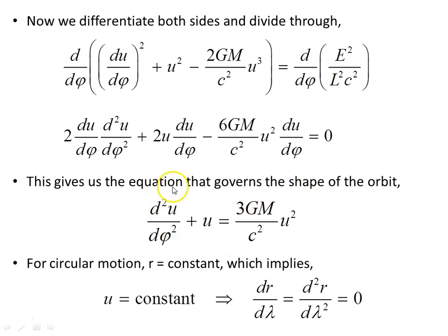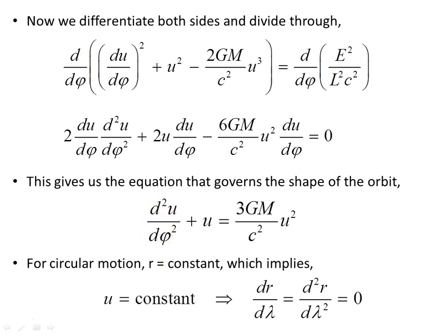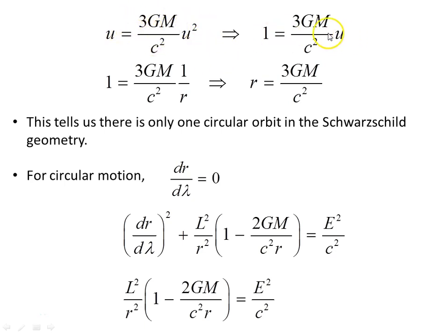This orbit equation applies to massless particles. For circular motion, R is constant, so u is constant and all derivatives of u with respect to φ vanish. Substituting into the orbit equation, the second derivative term disappears, leaving u = 3GMu²/c². Dividing through by u and substituting R = 1/u back in, we solve for R and get R = 3GM/c². This tells us there is only one circular orbit in the Schwarzschild geometry, at this single value.